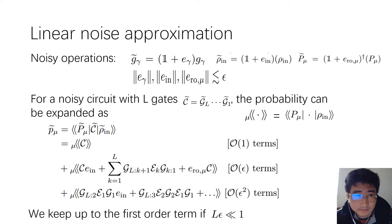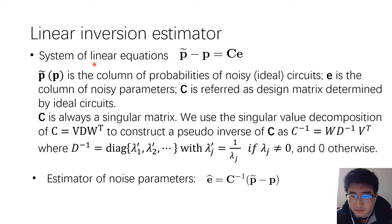We need to run a set of random circuits and measure the probabilities of the outcomes such that we can construct a set of linear equations. Here, p̃(p) is a column of probabilities of noisy circuits, and p is the corresponding probabilities of ideal circuits.